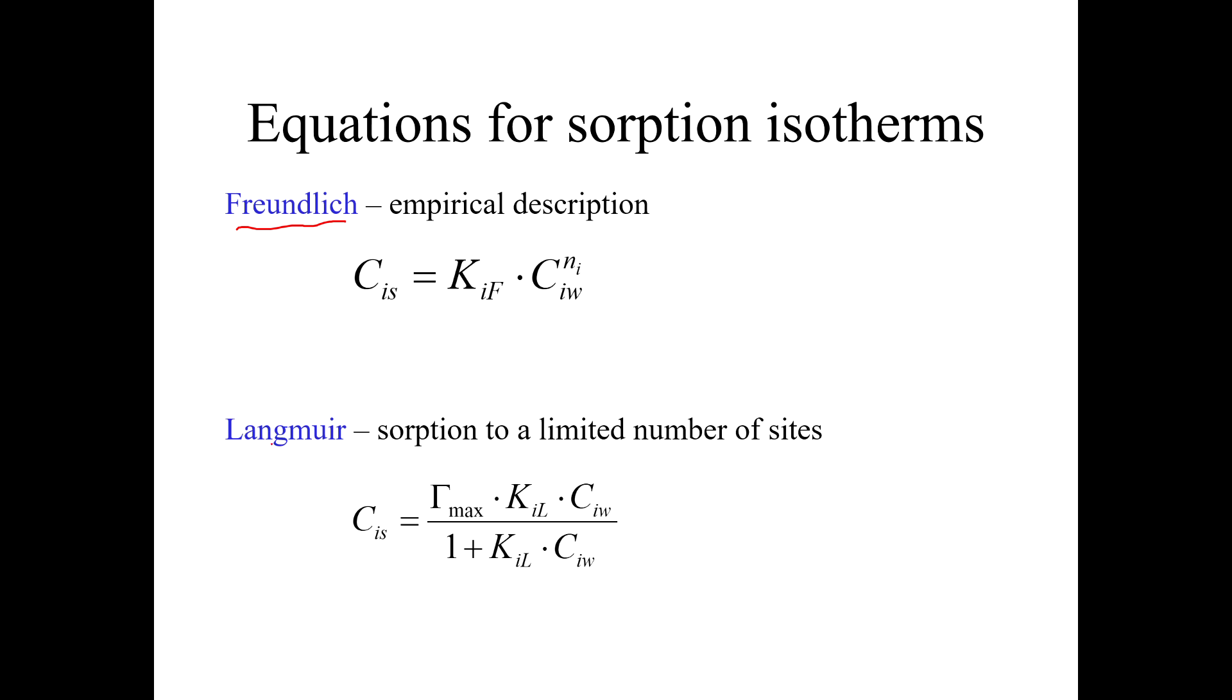So they're named after two dead white guys: Freundlich, which means friendly in German, and Langmuir, which I don't think means anything at all. And so the Freundlich equation is completely empirical. He just dreamed this up. This is an equation that just happens to fit the data. There's no mechanistic thing behind it. But Langmuir, this equation you can derive from first principles. And it describes sorption to a limited number of sites.